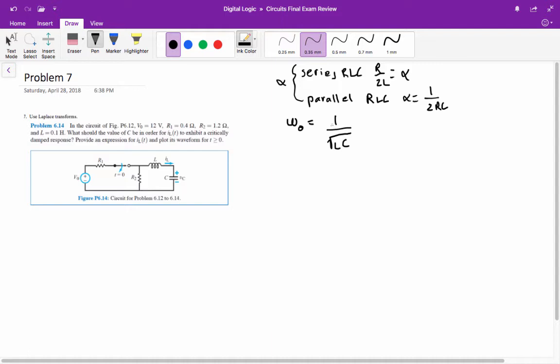If alpha is greater than omega-naught, then we have overdamped. If alpha equals omega-naught, then we have critically damped. If alpha is less than omega-naught, then we have underdamped.